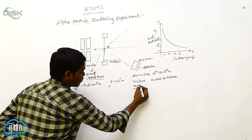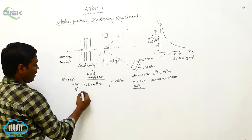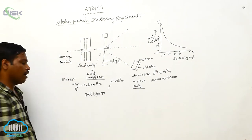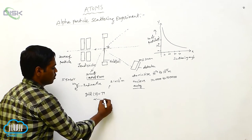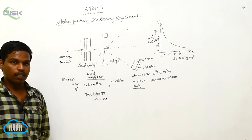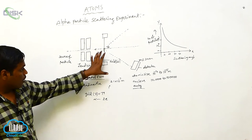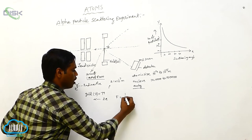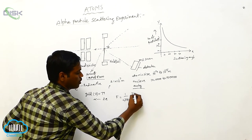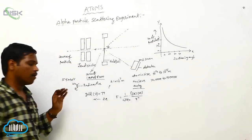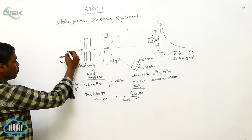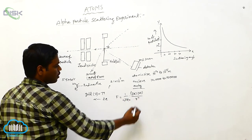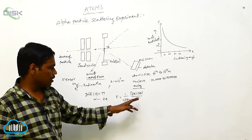Here we took gold foil which has atomic number Z = 79, and the alpha particle consists of two positive charges. The repulsive force F is given by Coulomb's repulsive force: F = (1 / 4πε₀) × (ZE × 2E) / R², where R is the distance between the alpha particle and the gold foil, Z is the atomic number of gold, E is the charge of gold, and 2E is the charge of the alpha particle.